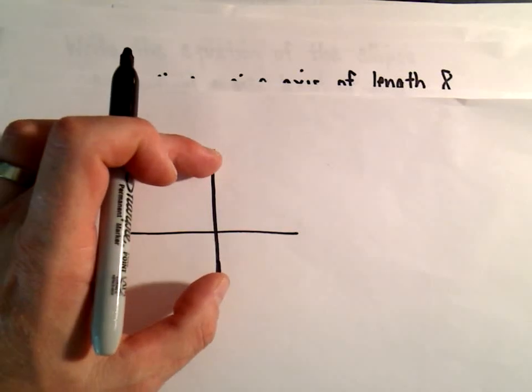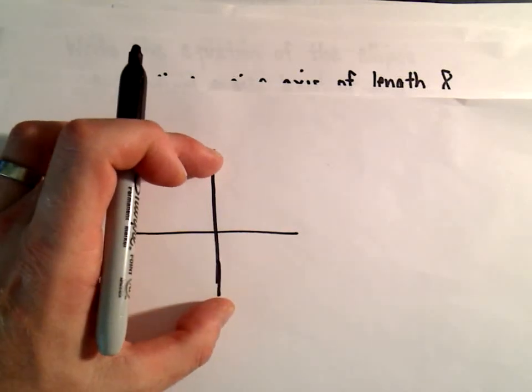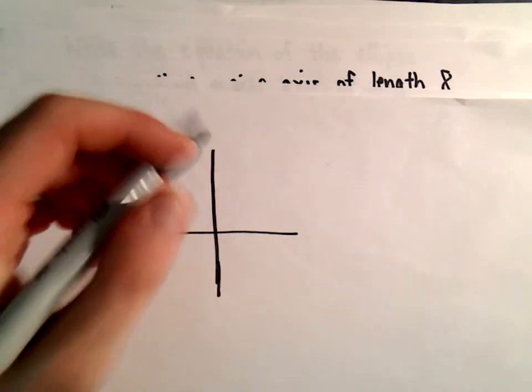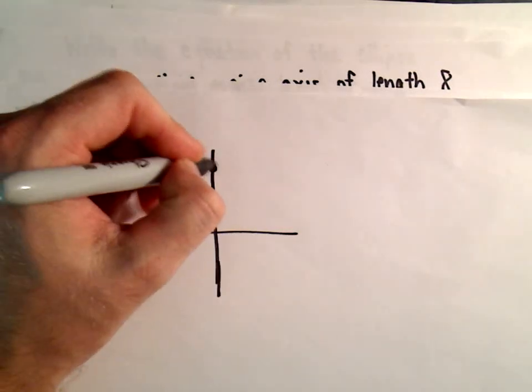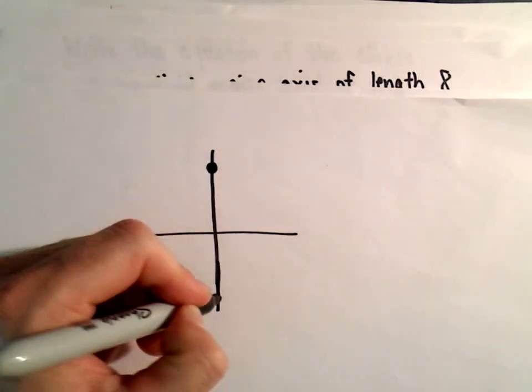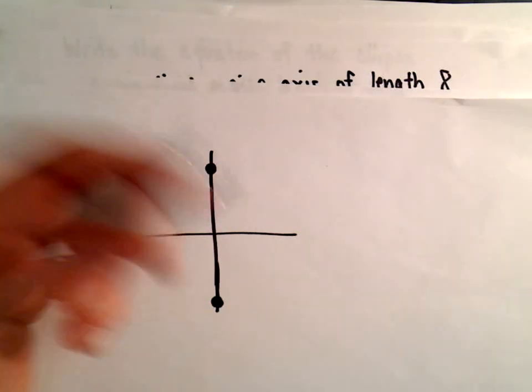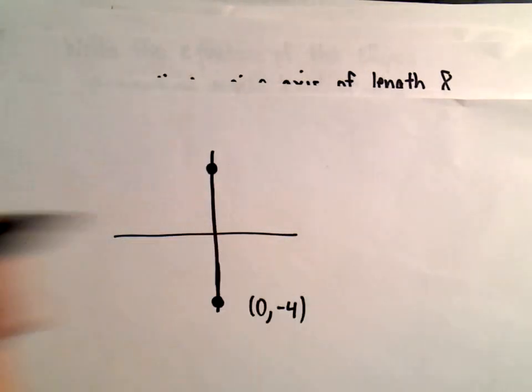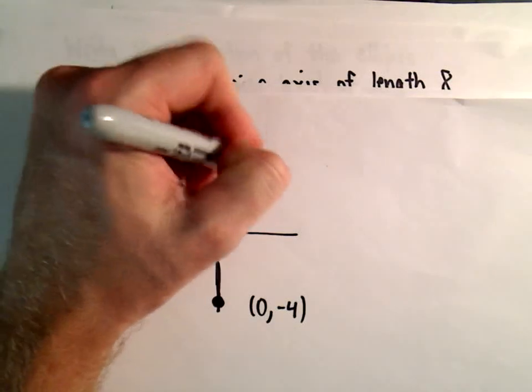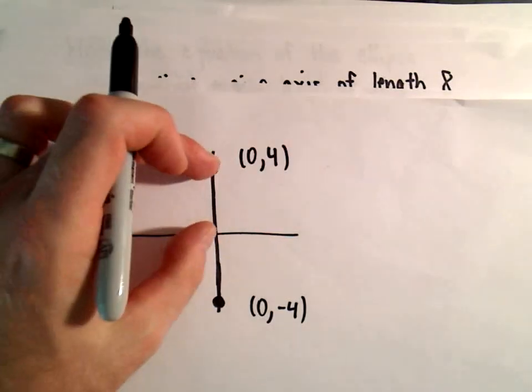So it's centered at the origin, so that tells me that to go from one vertex we would have to go four units up and four units down. So one vertex will be at (0, -4) and another one will be at (0, 4). That'll give us a distance of 8 units.